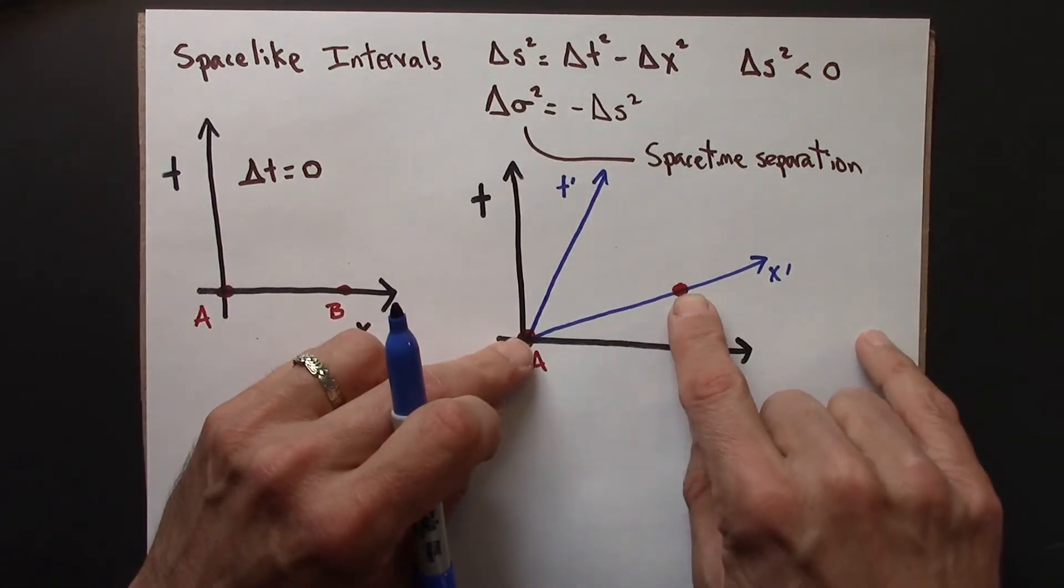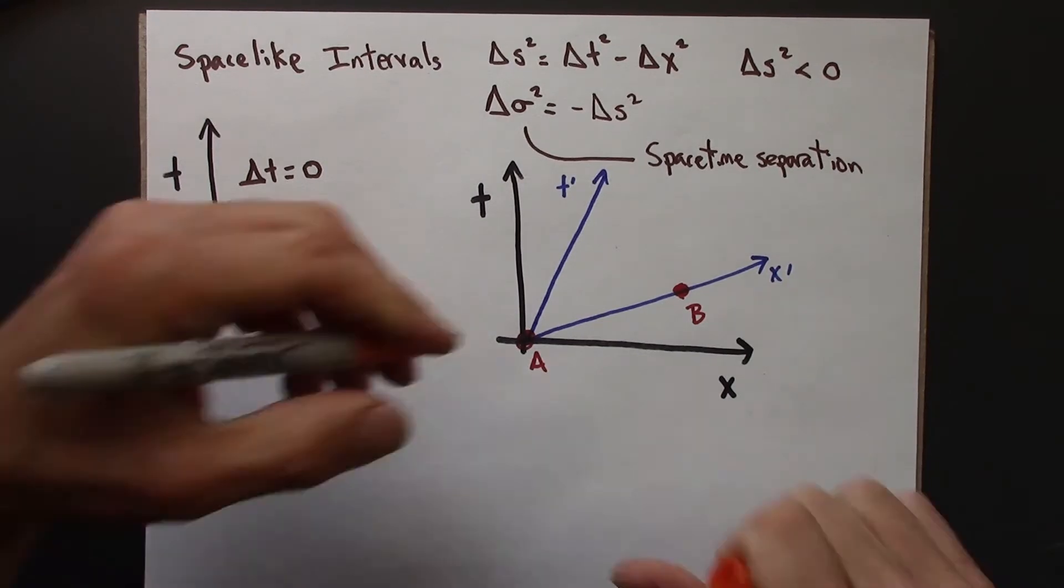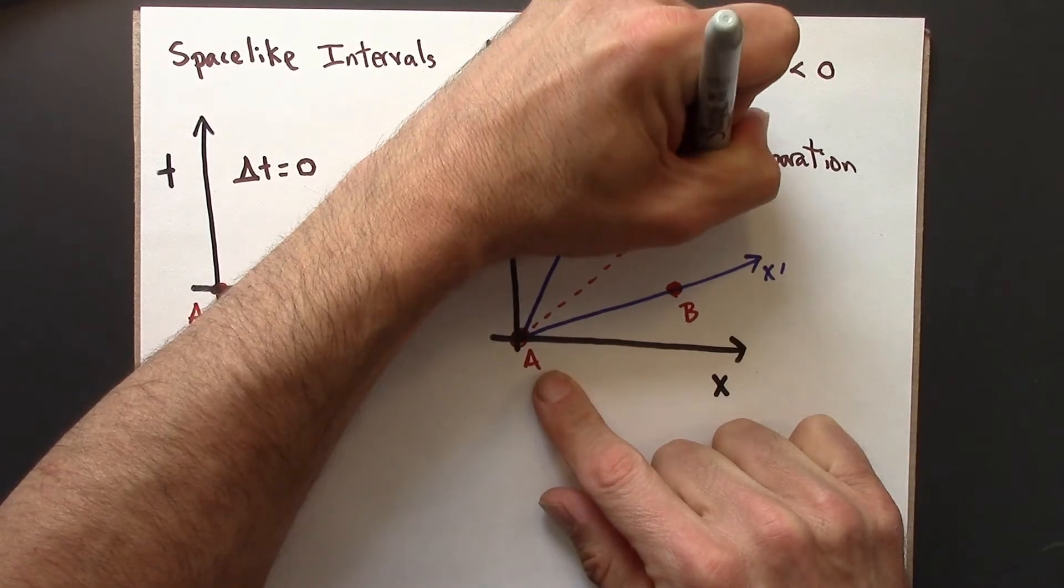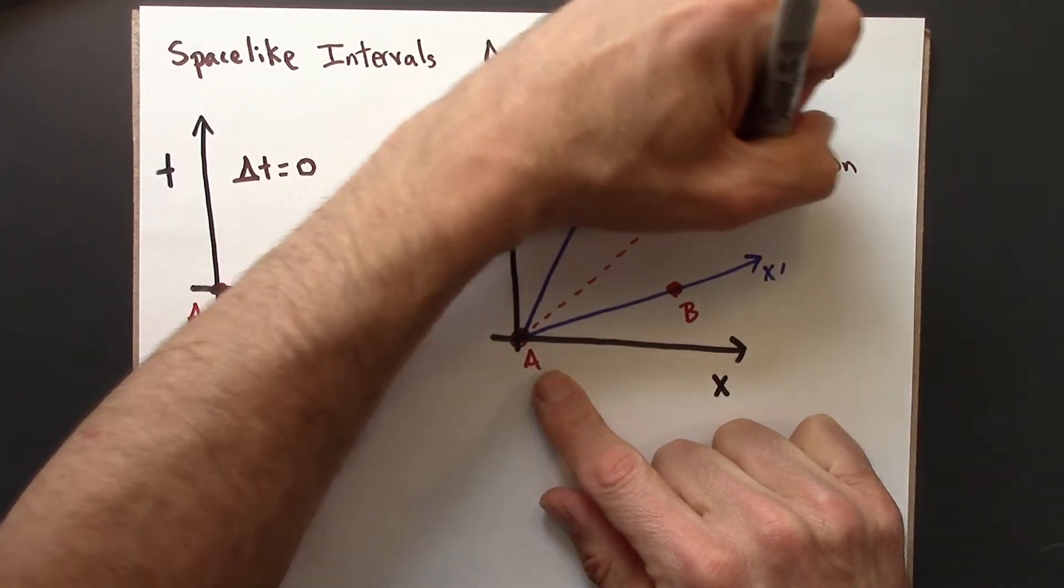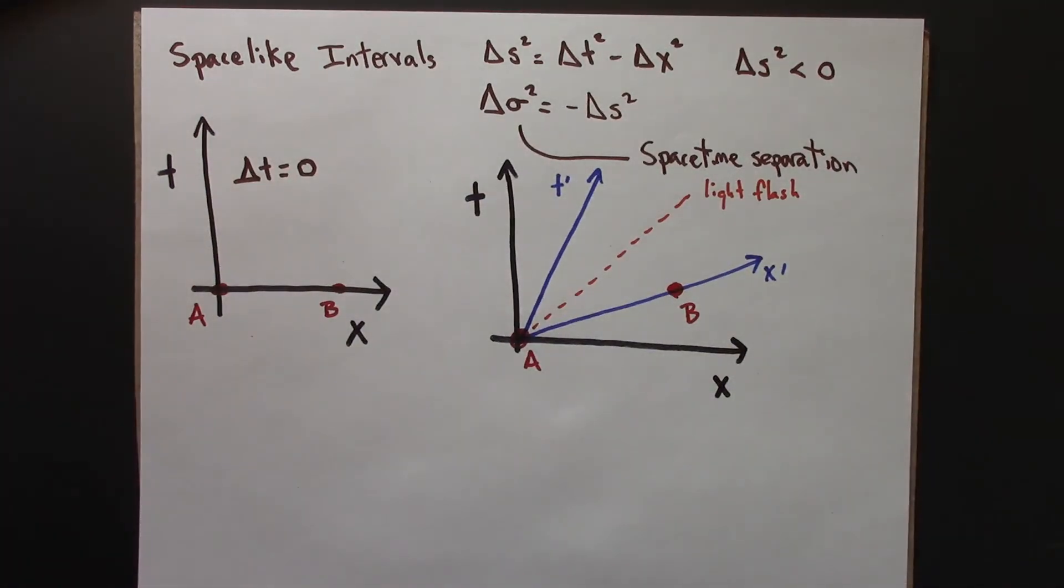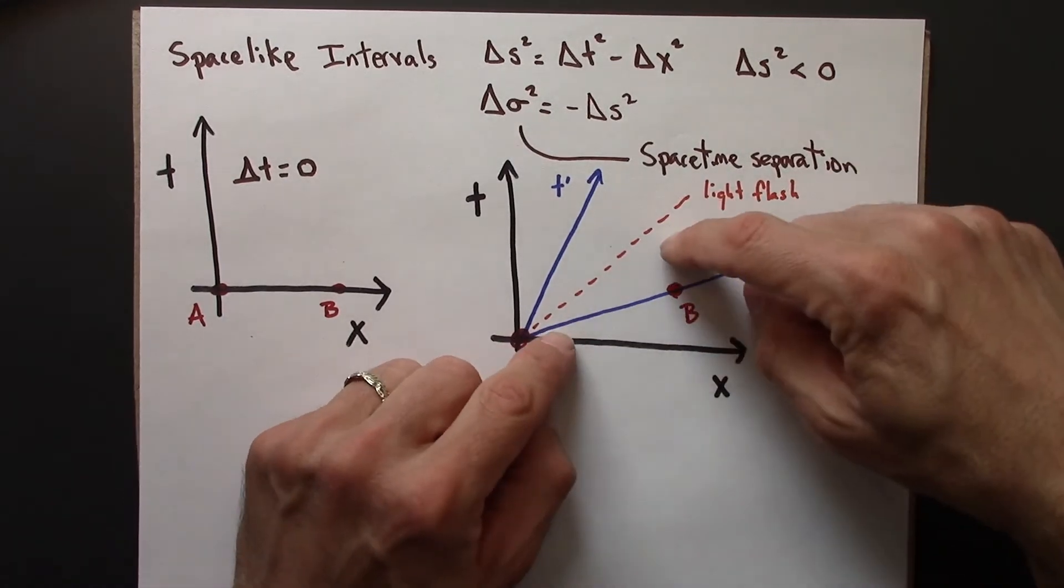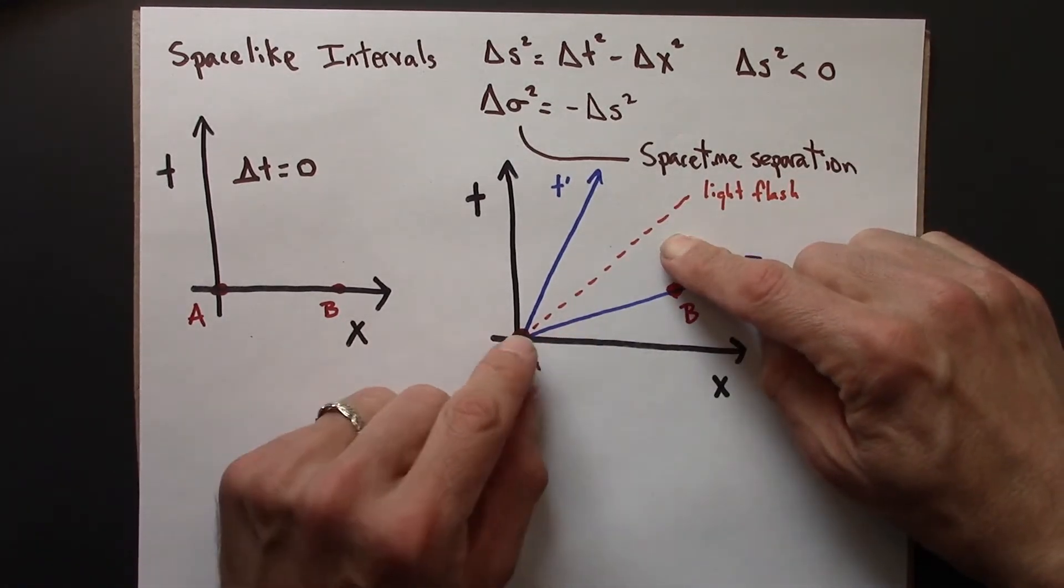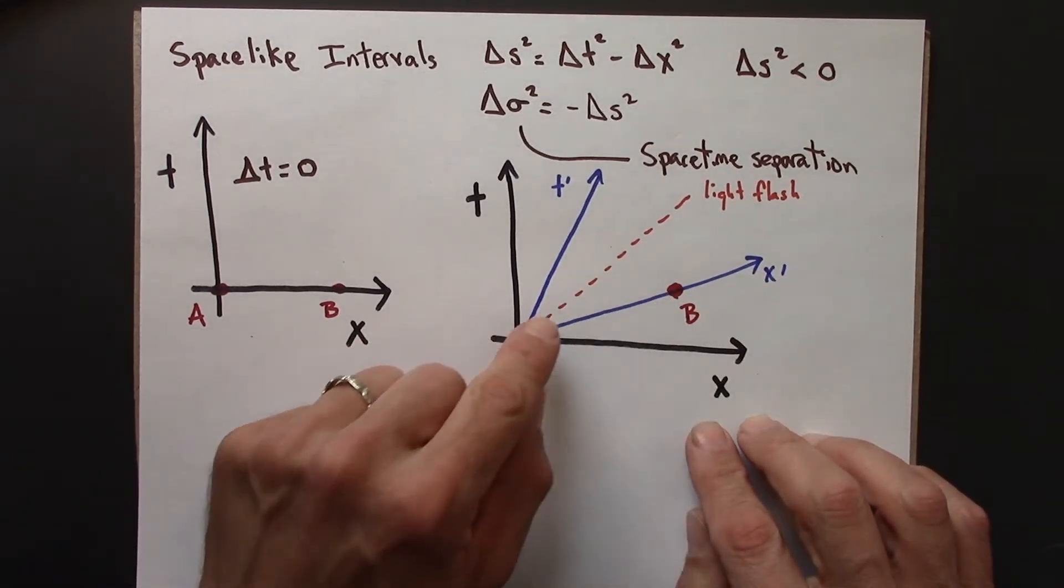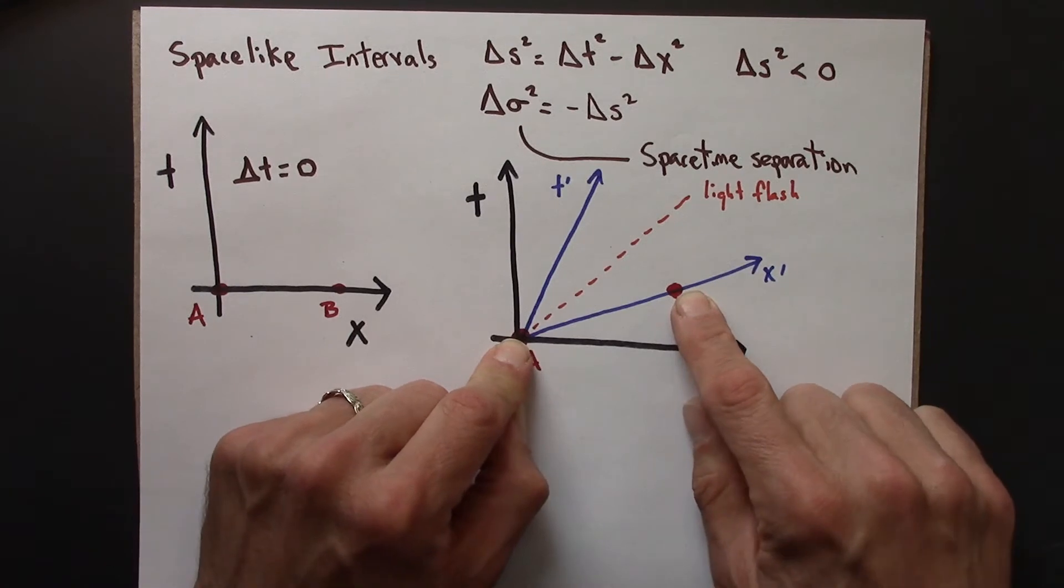So there's some reference frame. Wherever B is over here, as long as it's below the light flash. So this is just separating spacetime into two regions. Anything in here is going to have a delta x greater than delta t. And if that's the case, I can always find some reference frame. There's some other reference frame where A and B are along the x-primed axis.